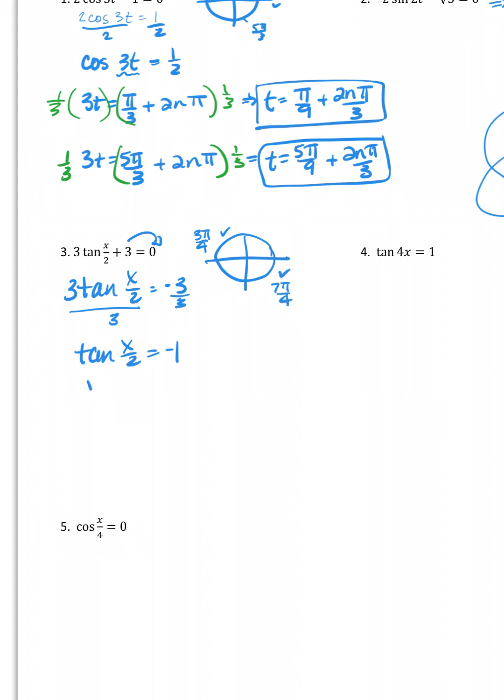So I'm going to set those equal. x over two is equal to three pi over four, and every revolution after, right, two n pi. And x over two is equal to seven pi over four plus two n pi.